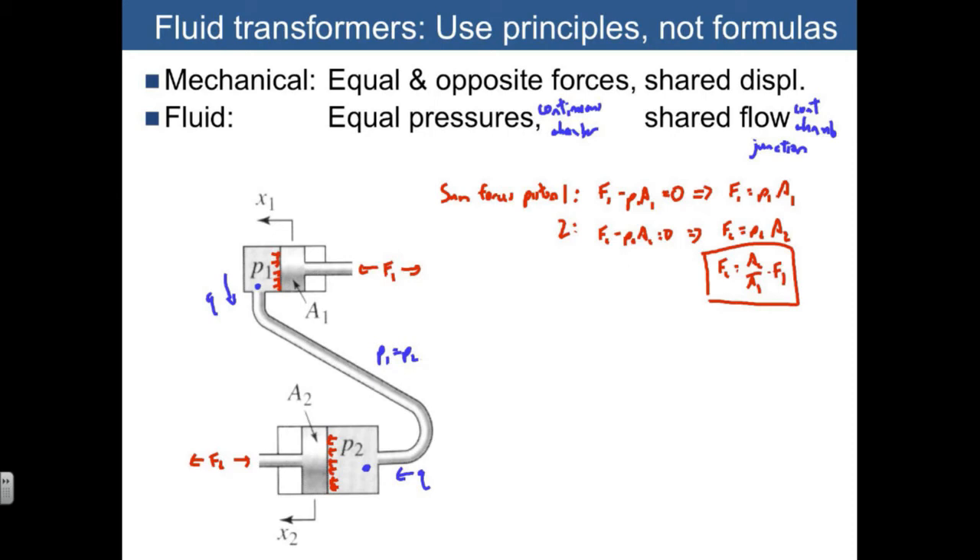Now let's derive the equation from shared flow. Here what shared flow lets us do is it lets us understand the relationship between the motion of the two pistons.